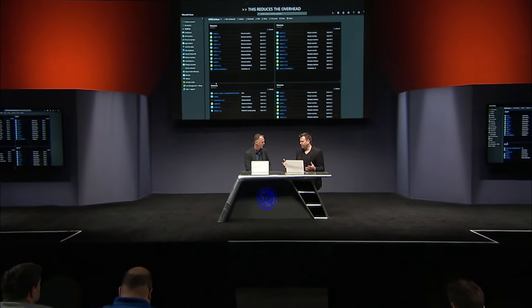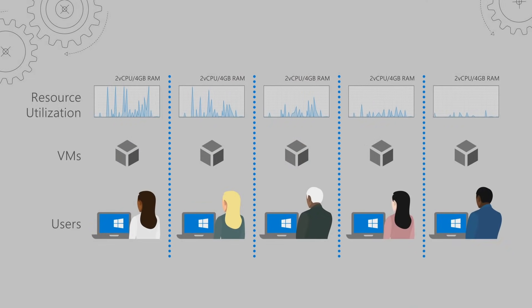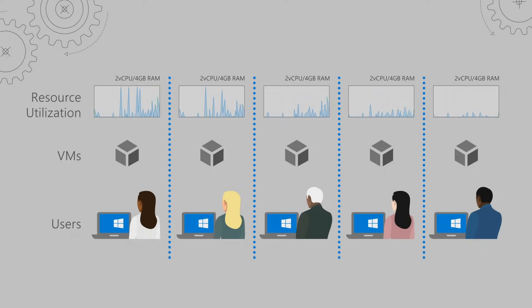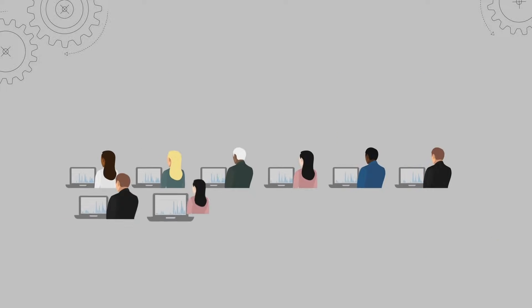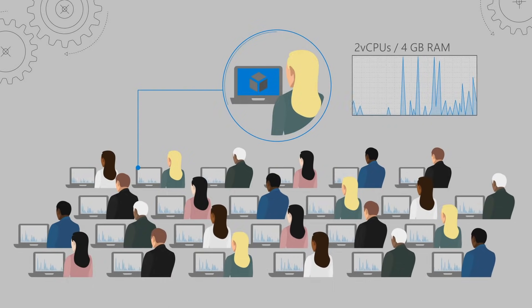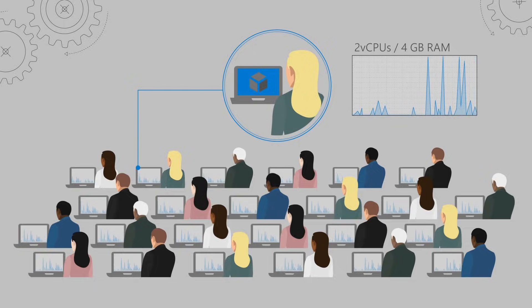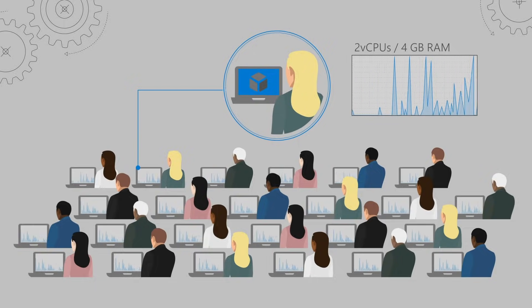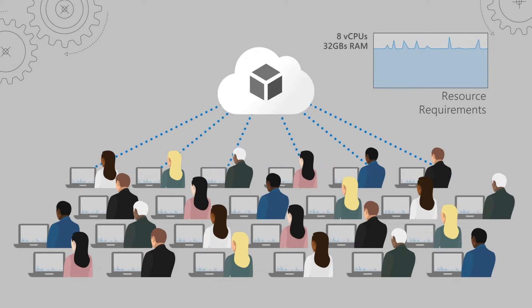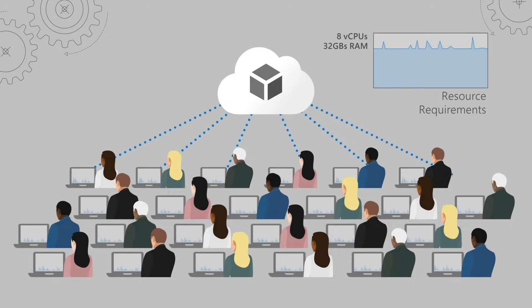The benefit of multi-user really comes down to resource utilization. In a single VM per user model you size each VM based on anticipated peak usage, but workers rarely consume peak capacity — yet you still pay for it. For 24 users whose peak usage requires 2 vCPUs and 4 GB RAM each, instead of 24 machines with 48 vCPUs and 96 GB RAM, Windows Virtual Desktop can host all 24 users on a single VM with 8 vCPUs and 32 GB RAM — more than 80% resource reduction.